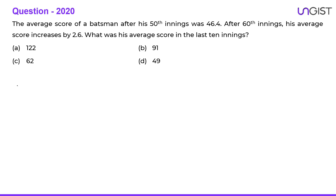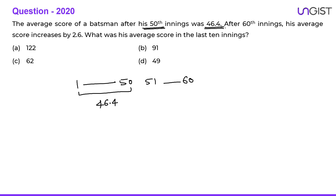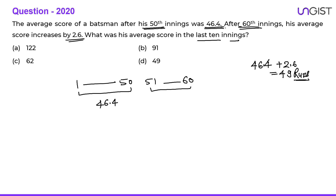Next question: the average score of a batsman after his 50th innings was 46.4. After the 60th innings his average score increased by 2.6. What was the average score in the last 10 innings? After 60 innings the average is 46.4 plus 2.6, which equals 49 runs.